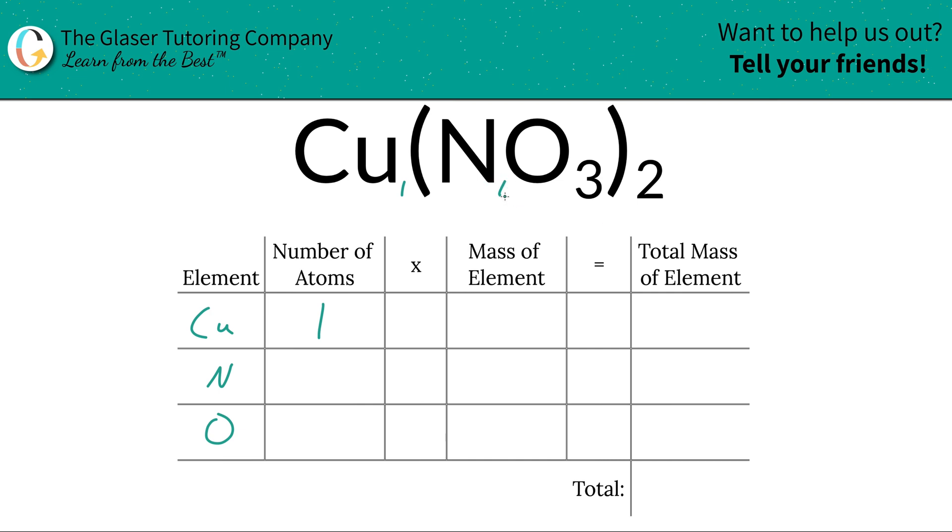Easier way to do it, take a look at that subscript, just multiply it by the outer subscript. Inner subscript, multiply it by outer subscript. So the total amount of nitrogen here is two. Following that same logic for oxygen then the total amount of oxygen should be six, you multiply them.